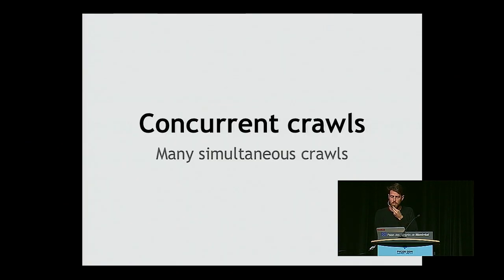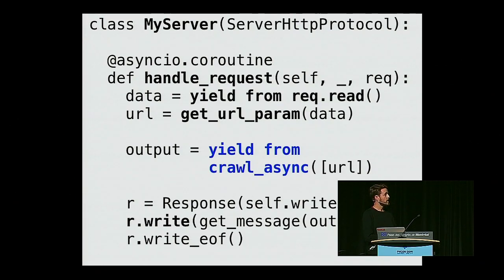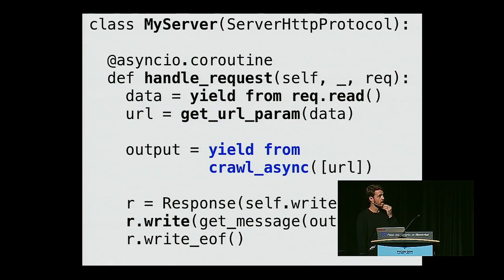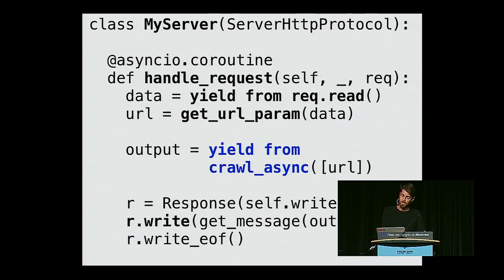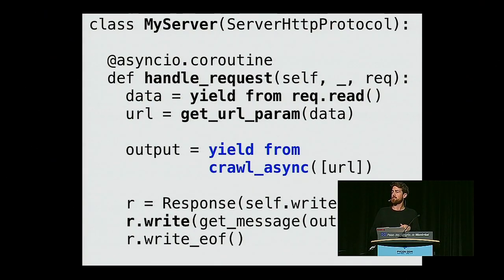One last thing is concurrent crawls — the thing I said was really hard the old way, taking 200 lines of code. Here's a server that will handle 10,000 clients doing crawls individually and concurrently. I have my crawl_async and I just yield from it using the aiohttp library. The handle_request coroutine gets called for everyone who sends a POST. I read from the POST data, pull the URL parameter, call the crawl function — which runs fully parallelized — get my response, write output, and EOF. It's trivial to go from a naive program to a ridiculously fast concurrent program. That is why Tulip matters.